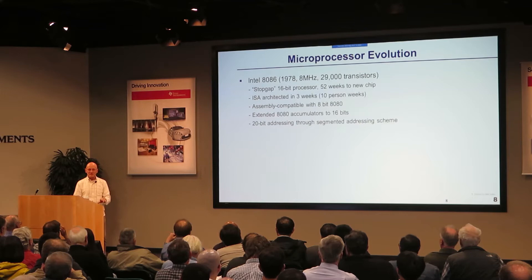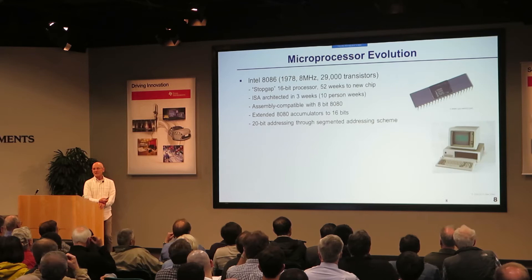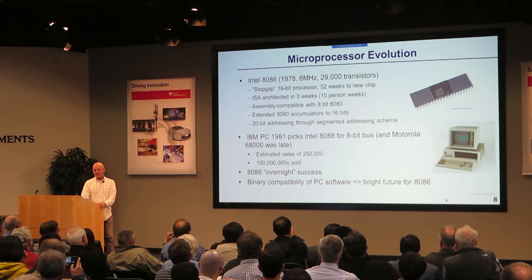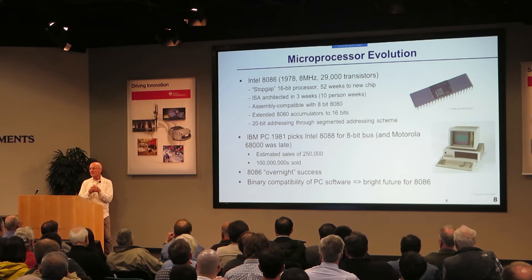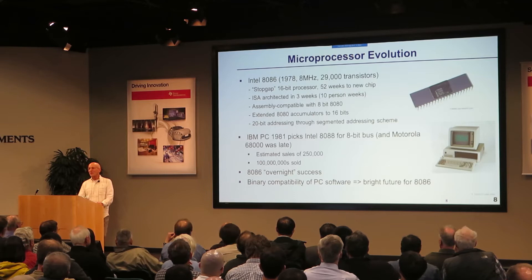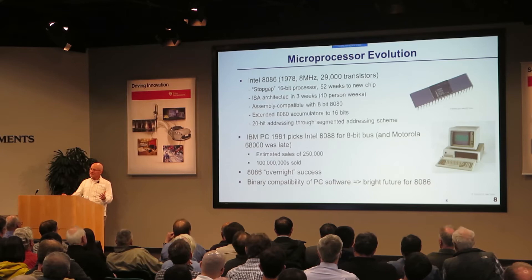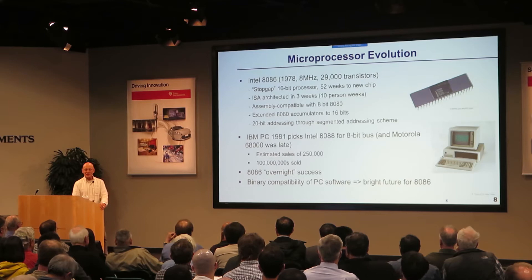Thanks to Gordon Moore's great luck, IBM decided to get into the personal computer market and needed a microprocessor. The Motorola 68000 was the favorite going in — an elegant instruction set similar to the IBM 360 — but it wasn't ready, it was late. Intel had made a version of the 8086 with an 8-bit bus that allowed a cheaper PC to be built. IBM adopted it; they thought there would be 250,000 units sold — it was 100 million. The 8086 became an overnight success, and because of binary compatibility, it had an incredibly valuable franchise. This emergency replacement had this incredibly bright future to this day.